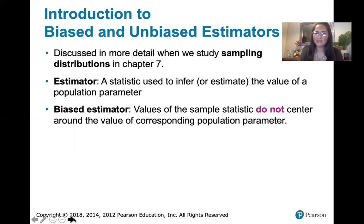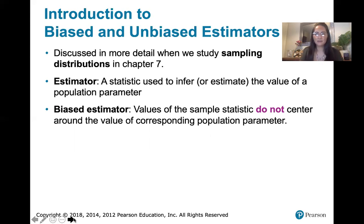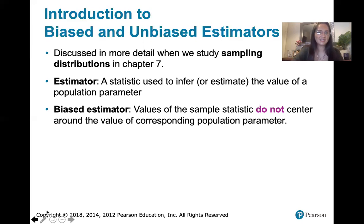But if the mean of all those sample statistics we collected by creating multiple samples is not equal to the true value of the corresponding population parameter, we say that the estimator isn't doing a very good job estimating. So we say it's a biased estimator.